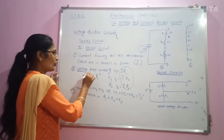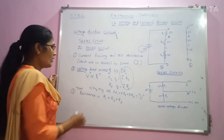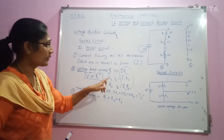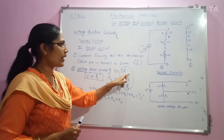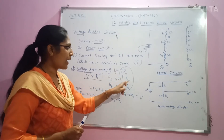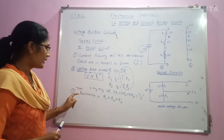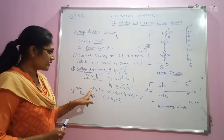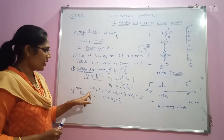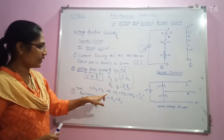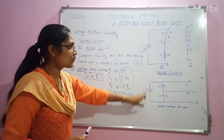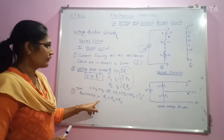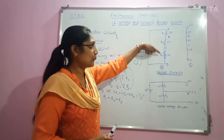If resistance increases, the voltage drop across it will also increase. Voltage drops are given by V1 = I × R1, V2 = I × R2, and V3 = I × R3. The third property is that the sum of all voltage drops V1 + V2 + V3 equals the applied voltage. Total resistance is given by R1 + R2 + R3.